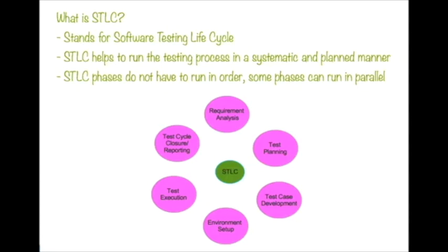In the requirement analysis phase, the QA team analyzes documents — it could be BRD, FRD, design documents, or different mockups. The QA team will analyze whatever documents are available and may have meetings with different stakeholders such as the BA, product team, product manager, and development team to understand certain requirements. Sometimes requirements are not written well, so in this phase the QA team reaches out to different team members to better understand them.